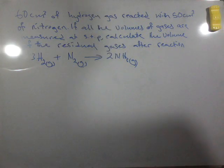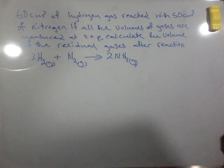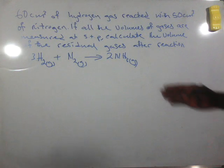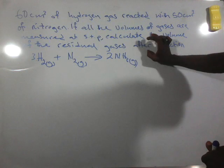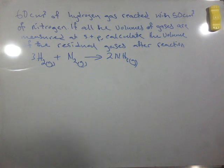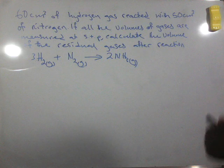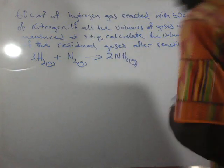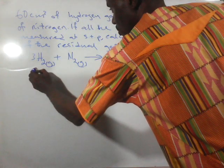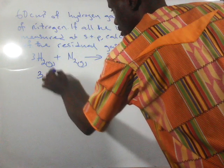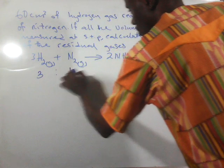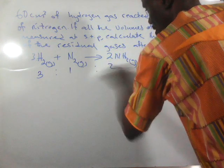Now we have the chemical equation: 3H₂ + N₂ → 2NH₃. What we want to find out here is the volume of the residual gas after the chemical reaction. From the equation, we find that we have a simple ratio of 3:1:2.